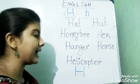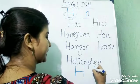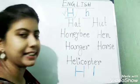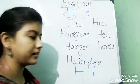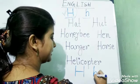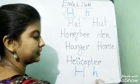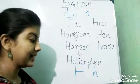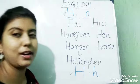For small h you have to draw a straight line, and then a half circle like this. A straight line, then a half circle. This will make small h. This is capital H and this is small h.